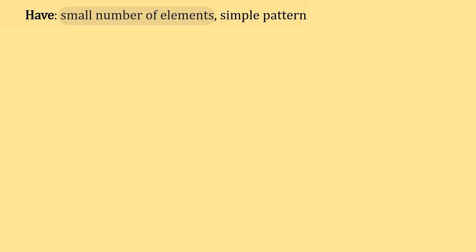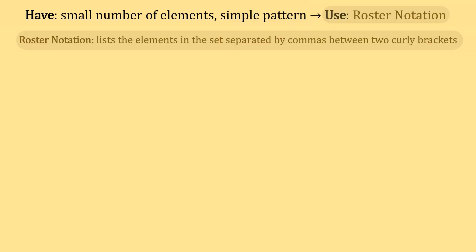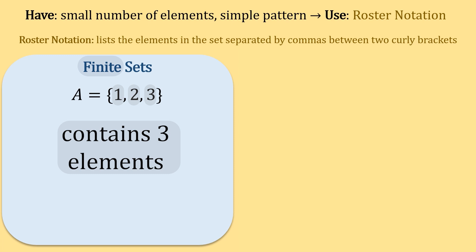When we have a small number of elements or a simple pattern for the elements our set contains, we use roster notation to define the set. Roster notation lists the elements in the set separated by commas between two curly brackets. Set A here is in roster notation and has a finite number of elements.